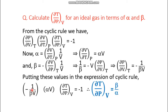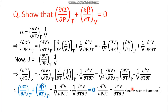Substituting into the cyclic rule equation: (−1/(beta × V)) × (alpha × V) × (del T / del P)_V = −1. The volume terms cancel and the negative signs cancel. Rearranging, beta goes to the numerator and alpha to the denominator, so the value of del T by del P_V is beta / alpha.